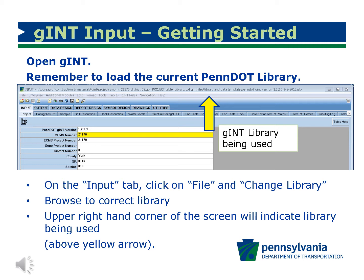Click on File, which is located in the upper right-hand corner of the screen, and then on Change Library and browse for the correct library. Gint software should be using the current PennDOT library and data template for data input and reports. You can check or verify the library being used by looking in the upper right-hand corner of the input screen.